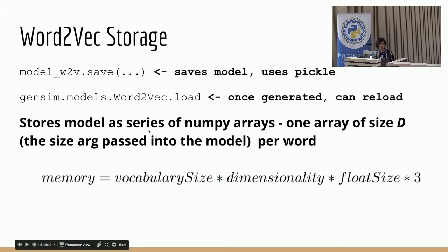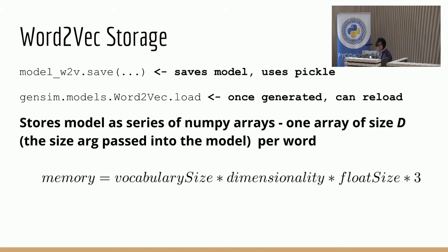Another useful thing to look at is how the model gets stored. Word2Vec stores each model as a series of NumPy arrays, and each array is of size equal to the size argument passed into the model. We have the vocabulary size, and if we multiply that by the number of feature dimensions and then by the float size, we can estimate how much memory gets used when generating this model. This is useful depending on the size of your dataset.